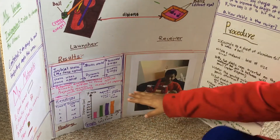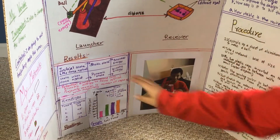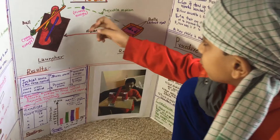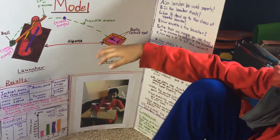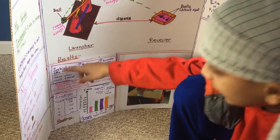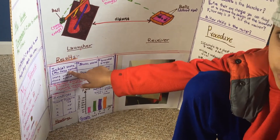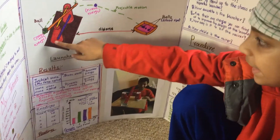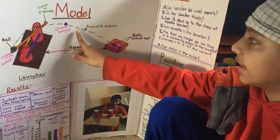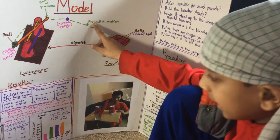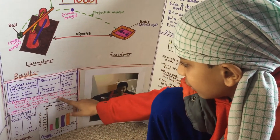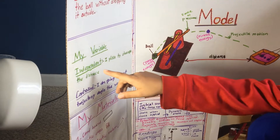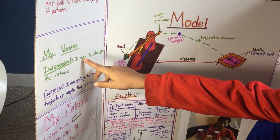Then the ball goes into projectile motion with the angle, and it lands into the receiver. If you don't know: potential energy is the initial state with no force applied; kinetic energy is the state when force is applied and the ball is flying in the air; and projectile motion is the motion of an object with a trajectory.